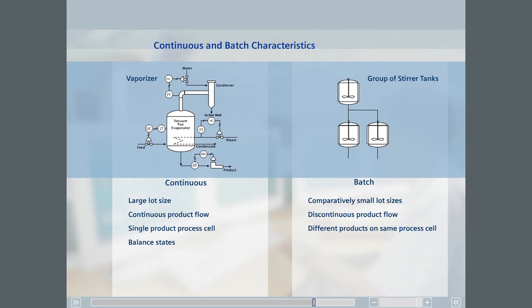While in batch processes, various different states may be required at different times in a unit to produce a product. For example, heating, stirring, and cooling are process actions that may be accomplished in the same unit during a batch.